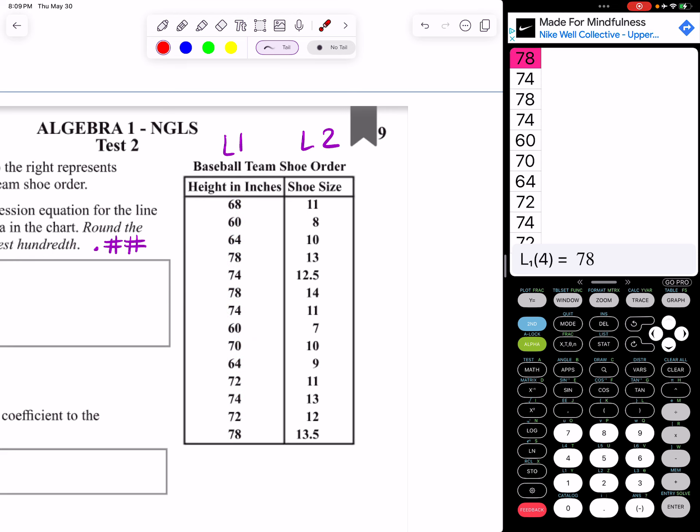Now we go back up and everything has to go in order when we're typing it. So now we have to go down this list. So now we're going to do 11, 8, 10, 13, 12.5, 14, 11, 7, 10, 9, 11, 13, 12, and then 13.5.